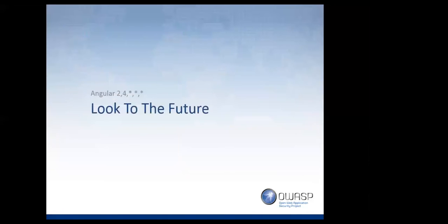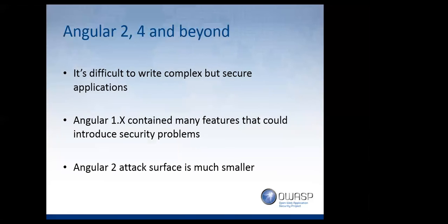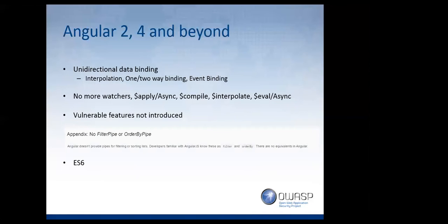Looking to the future: we have Angular 2 and 4 now. It's difficult to write complex but secure applications and vulnerabilities will always get introduced. Angular 1 contained many vulnerable features, but Angular 2's attack surface is significantly smaller and different. They rewrote the entire framework — it uses unidirectional data binding rather than going through scope, root scope, and controller. It's now directly to elements with interpolation, one-way, two-way data binding, and event binding. They got rid of all watches, $apply, $compile, $interpolate, and some vulnerable features simply weren't introduced. So there's no more order-by pipe.